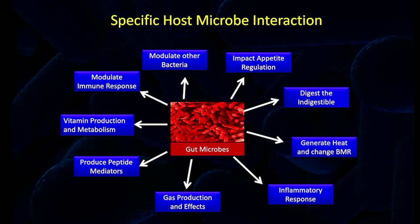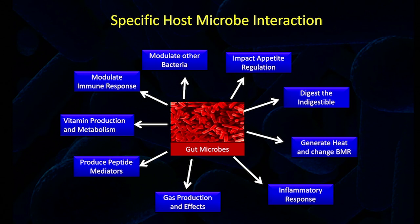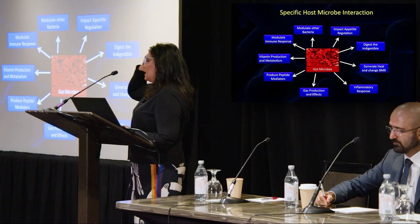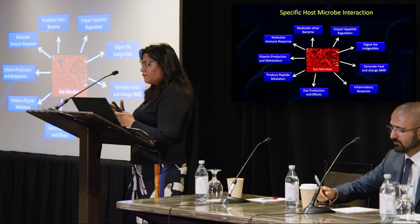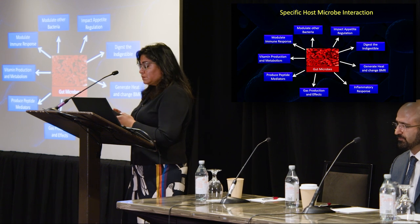The microbiome inside the human does a lot for us, and we do a lot for our microbiome. They help with immune defense, digesting the indigestible, producing peptide mediators, regulating body weight and temperature, producing gas and other byproducts, modulating our immune response, and helping us make vitamins. In turn, we keep them warm, safe, and well-fed. That's the symbiosis between us and our microbes.